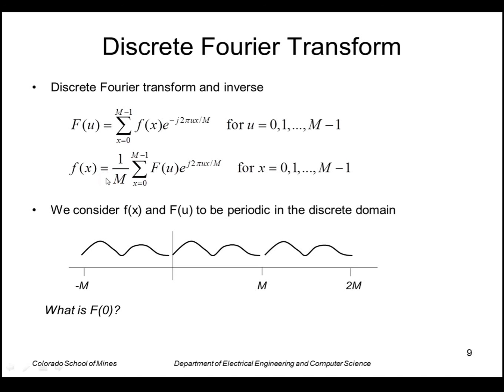Note there's a constant here of one over m in the inverse transform. So we can consider the function and this transform to be periodic. So if we have a function defined from zero to m minus one, we consider that as repeating infinitely in both directions.